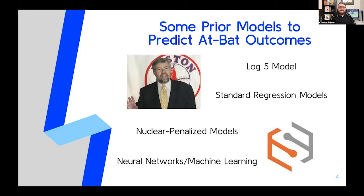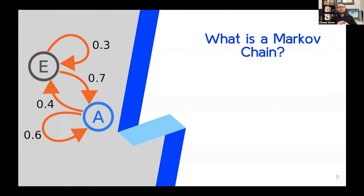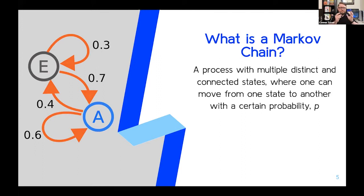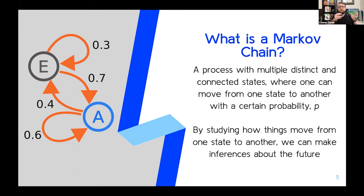As the title might suggest, that has to do with Markov chains. A Markov chain is a system made up of a set of distinct and connected states where you can move from one state to another with a certain probability. This is a very powerful tool because we can study how people move from one state to another and use that information to make inferences about where people will go and end up in the future. There are two main types of Markov chains, but for our purposes here today, we're only going to be focusing on the absorbing Markov chain.